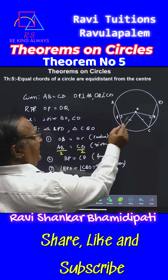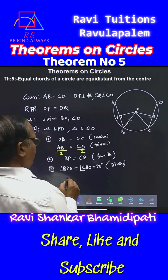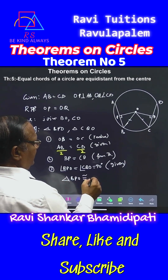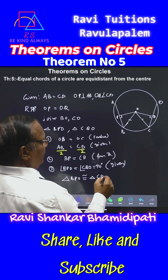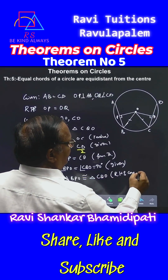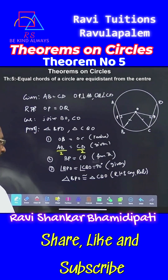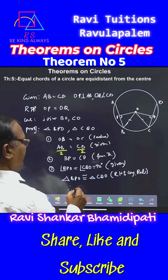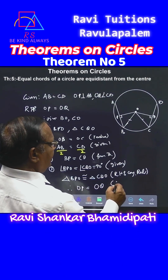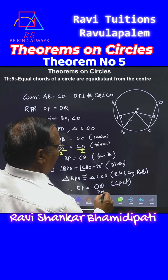By the Right angle, Hypotenuse, and Side property, triangle BPO is congruent to triangle CQO by RHS congruence. Therefore, OP is equal to OQ. This is what we required to prove.